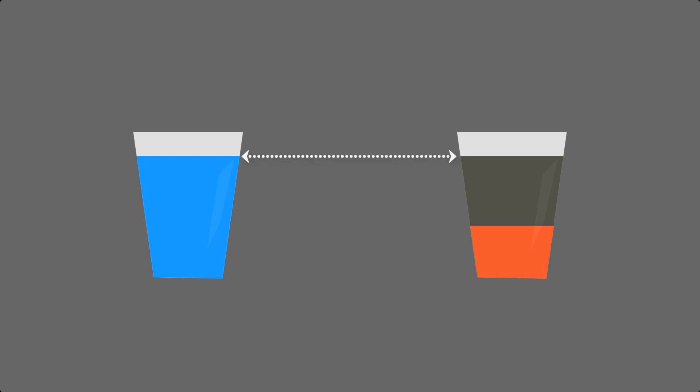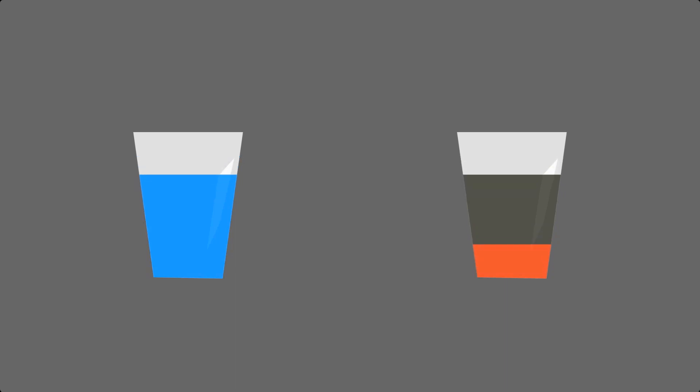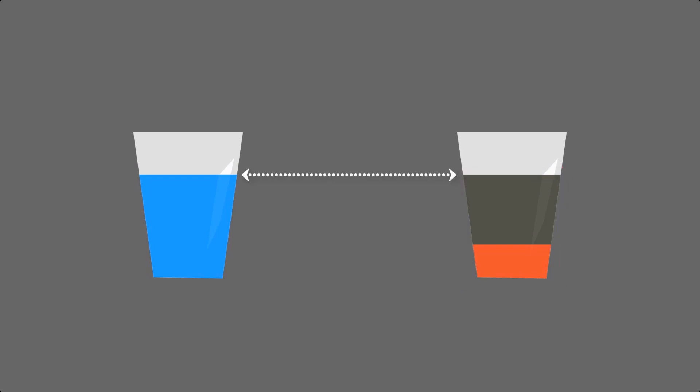You can add and remove from each glass, but you have to keep the levels in each cup exactly the same. That is, whenever there is a change, the two levels must be equal. It doesn't matter the proportion of black and red liquid in the second glass, but their total level must be equal to the level of blue liquid in the first glass. Blue must always equal black and red.